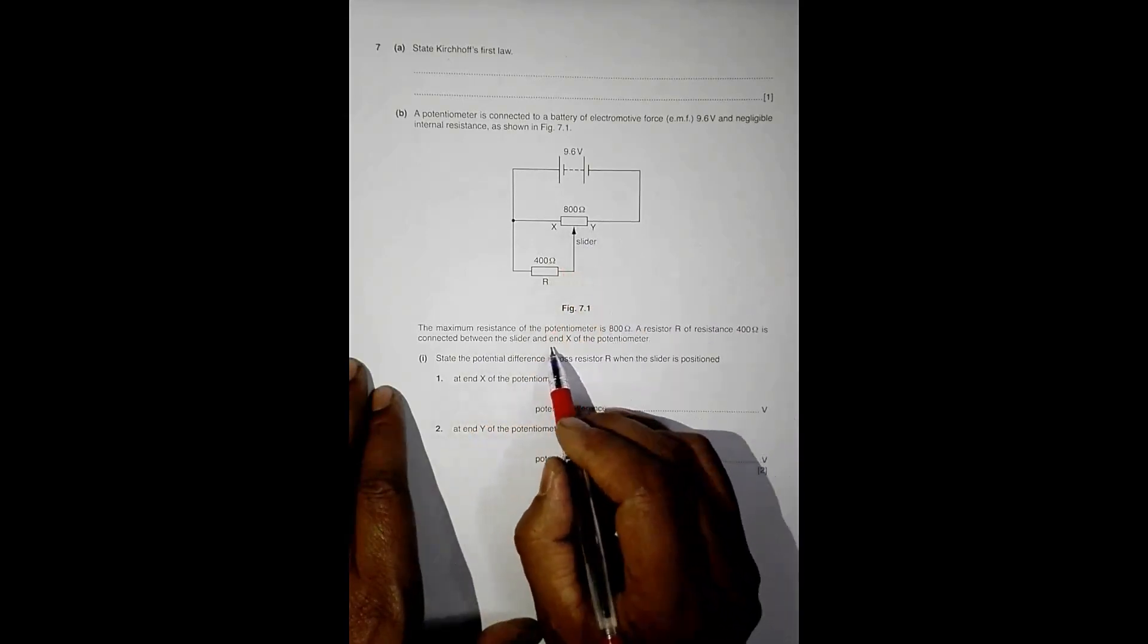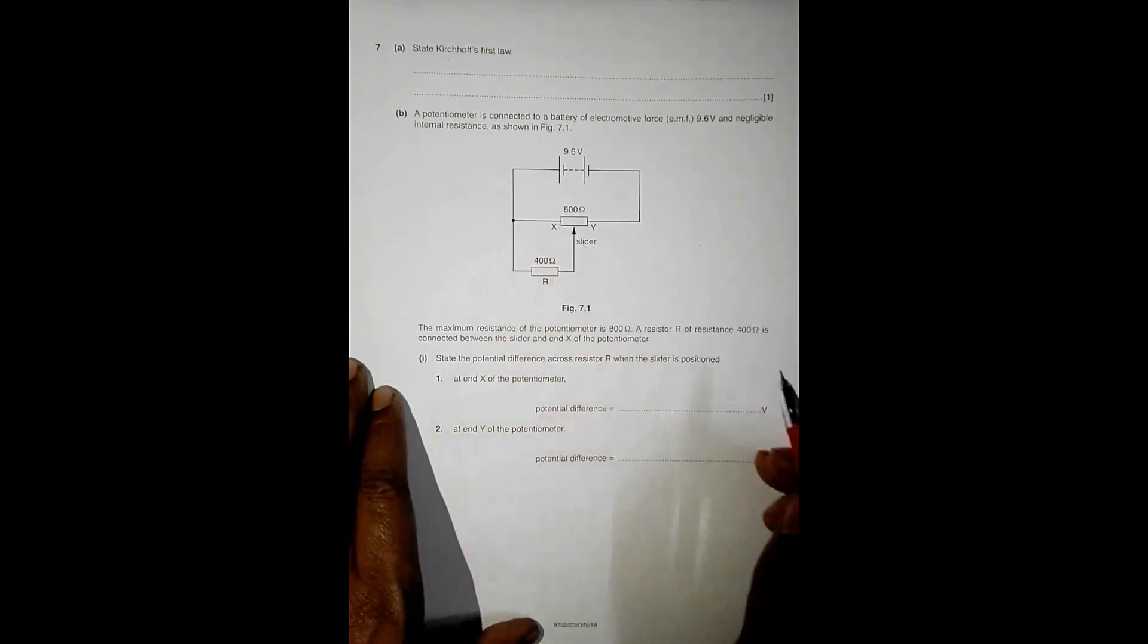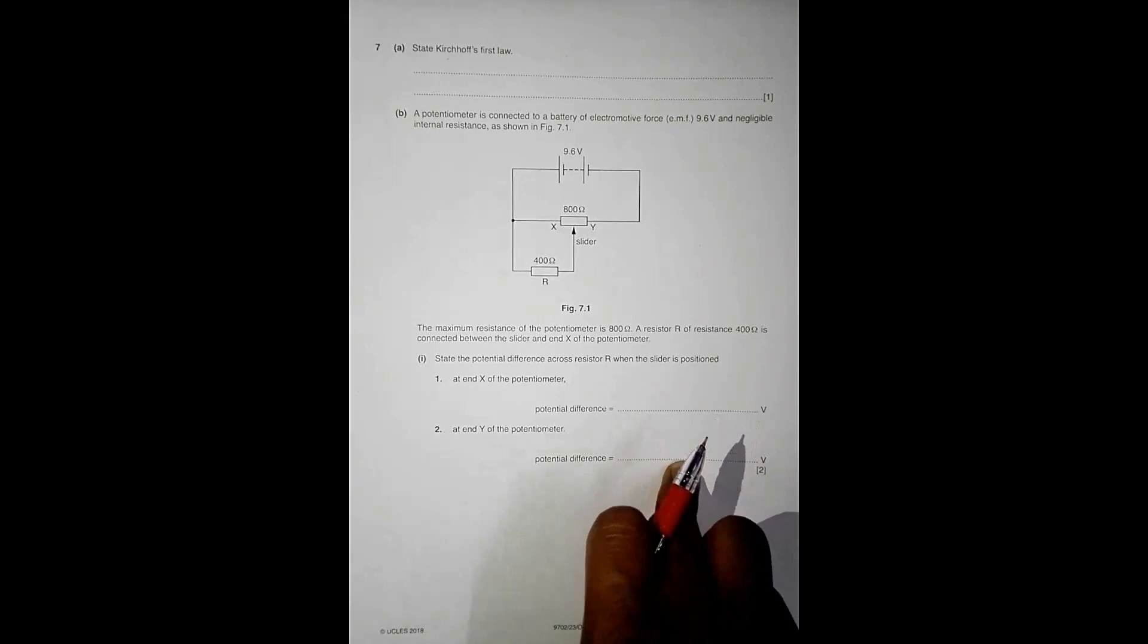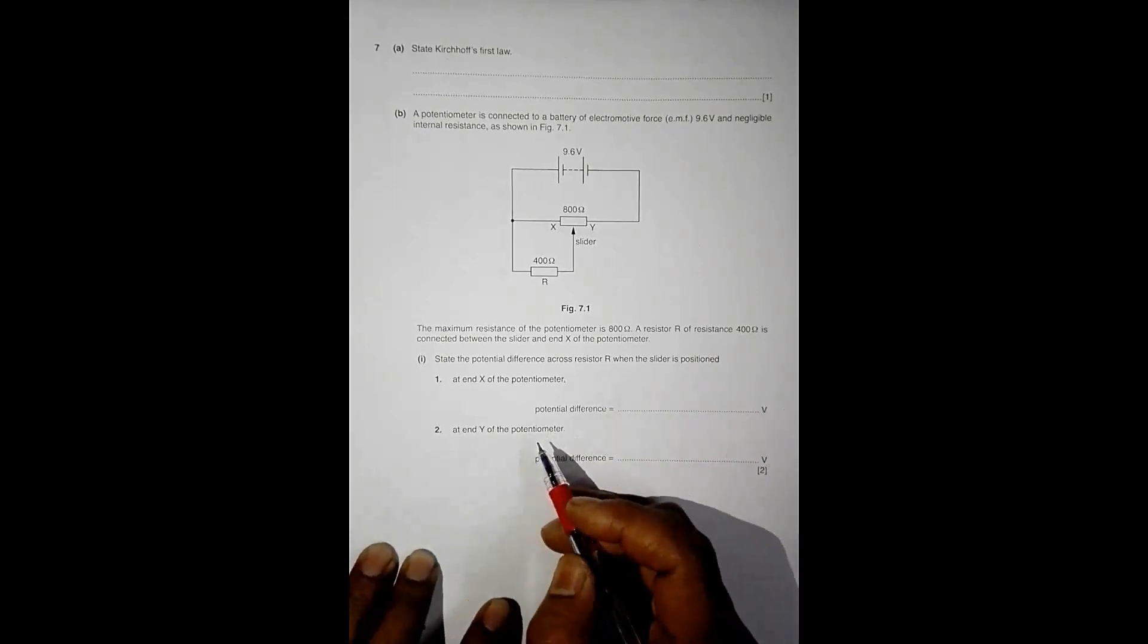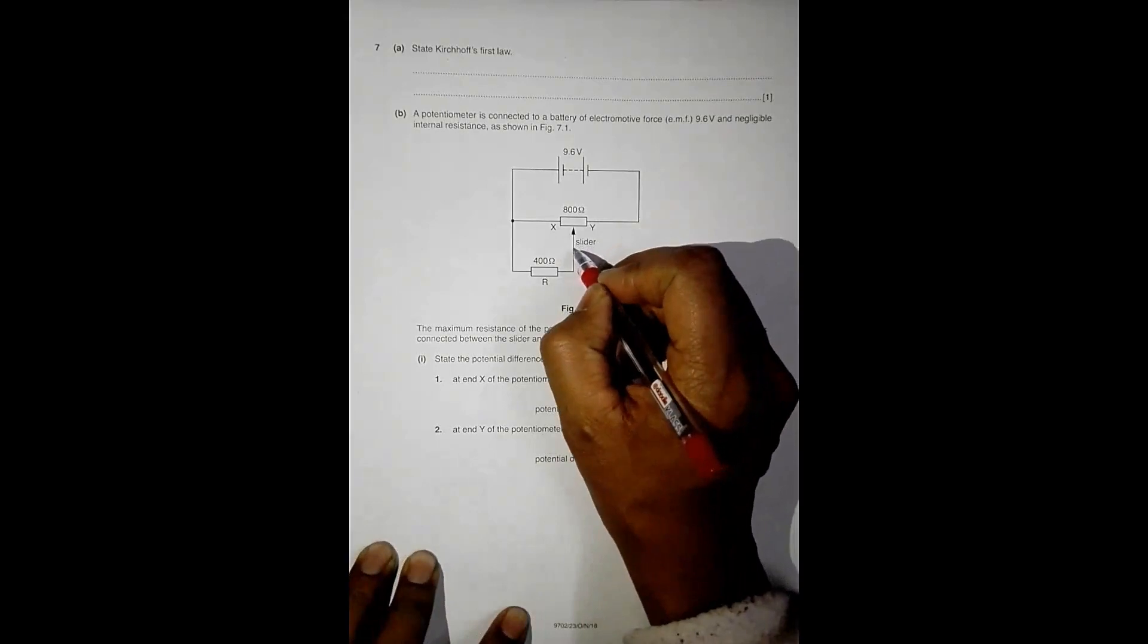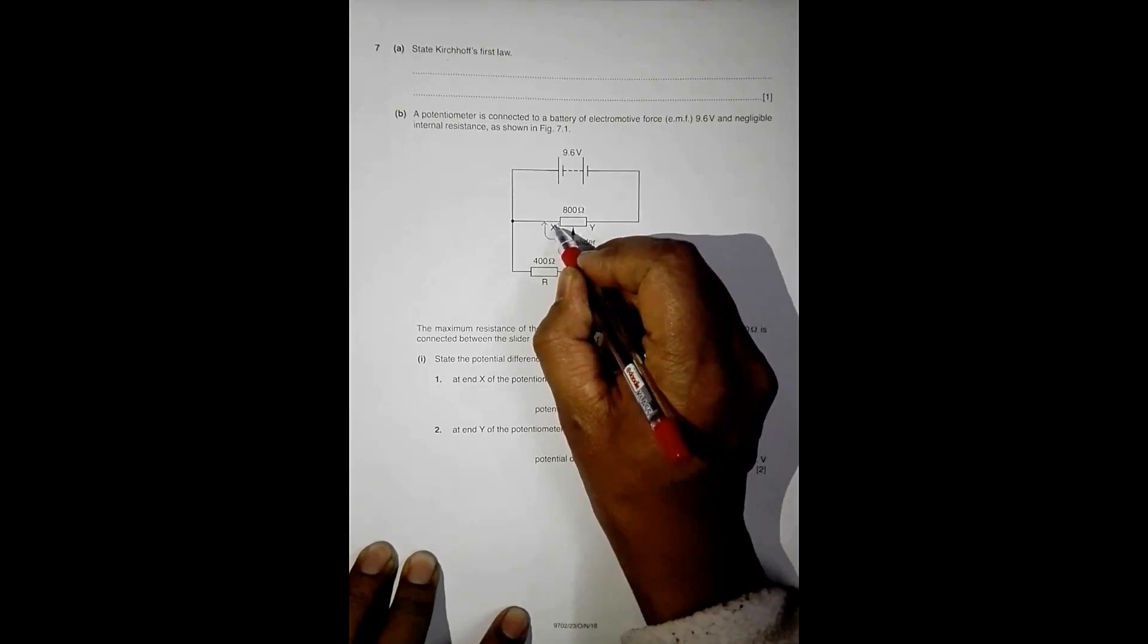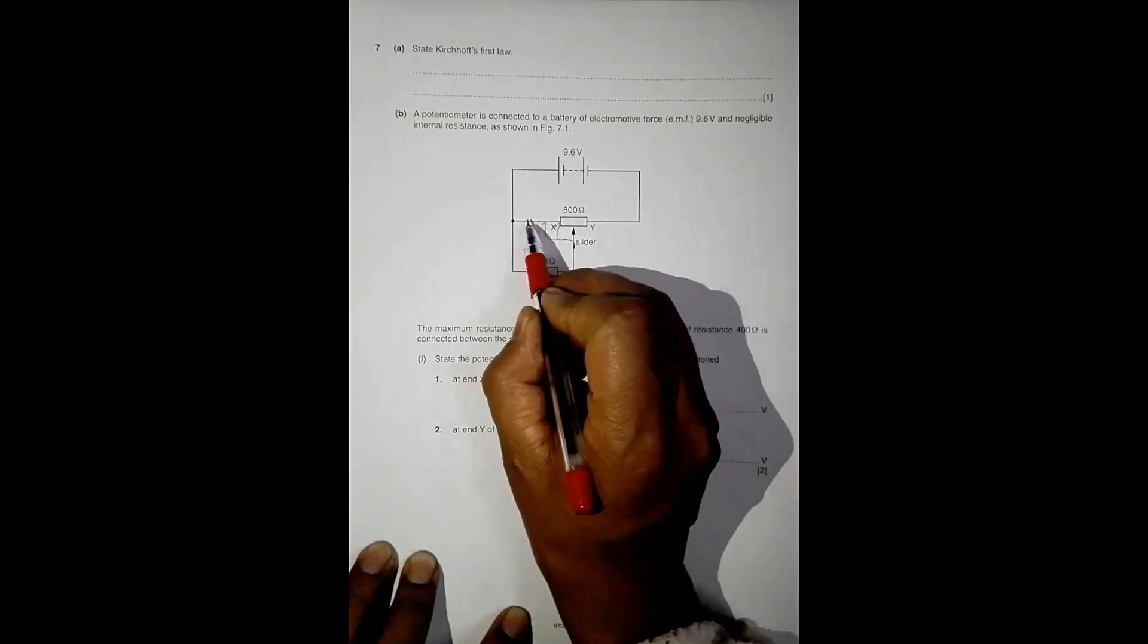A resistor R of resistance 400 ohms is connected between the slider and end X of the potentiometer. We have to state the PD across the resistor when the slider is positioned at end X first. So if I position this slider over here, what happens is the resistance enclosed is zero.